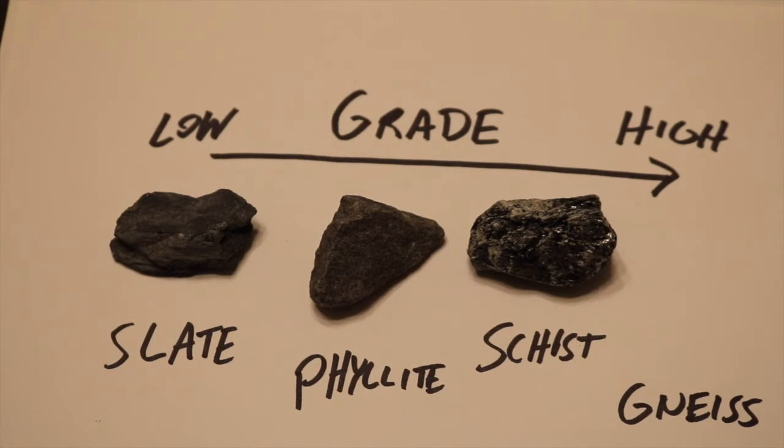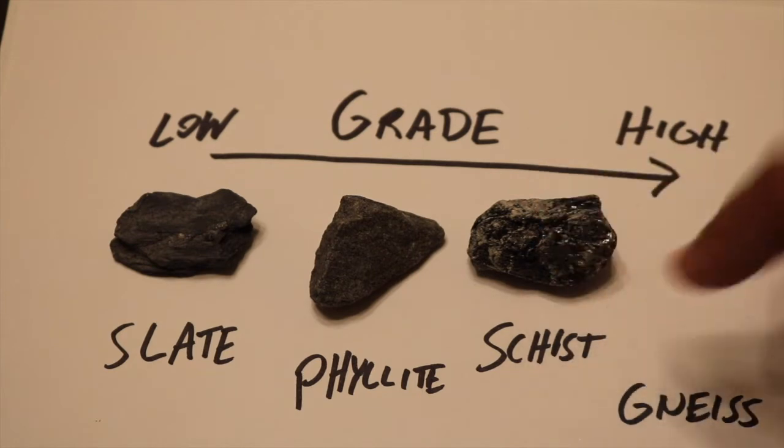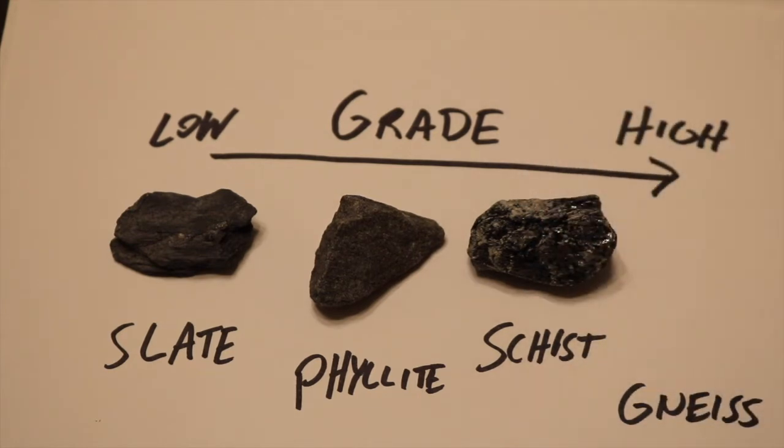Chlorite is a type of index mineral that forms under lower temperatures and pressures than other index minerals, such as muscovite, biotite, garnet, and staurolite.